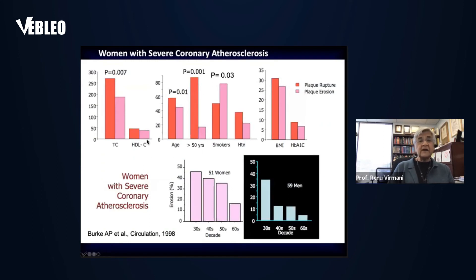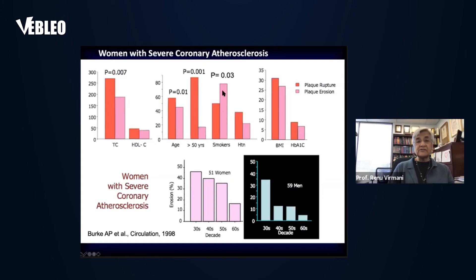We also looked at 51 women. Plaque rupture was associated with higher total cholesterol; erosion was associated with lower cholesterol. Age was a predictor — older women (greater than 50 years) are more likely to have plaque rupture, while younger women are more likely to have erosion. Smokers were more associated with erosion. Hypertension, BMI, and hemoglobin A1c (diabetic status) were not significantly different. Over decades, the percent erosion decreases — it's more common in younger women and less common in older women, and the same is true in men.